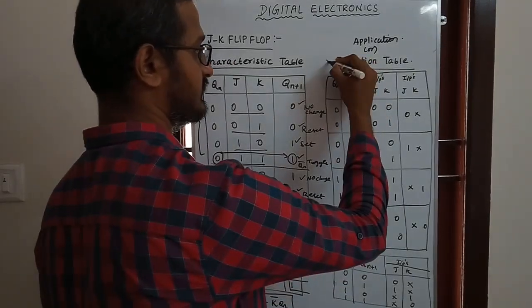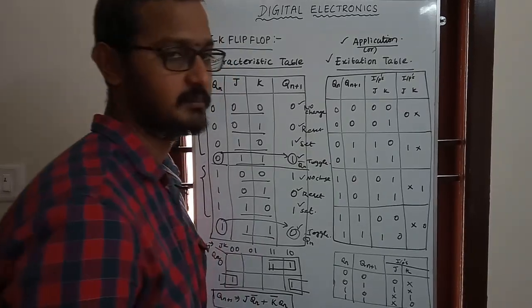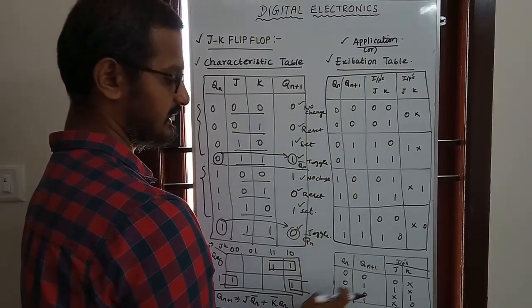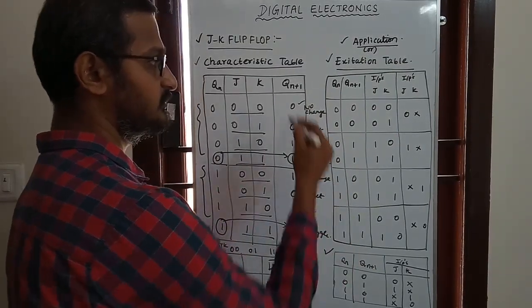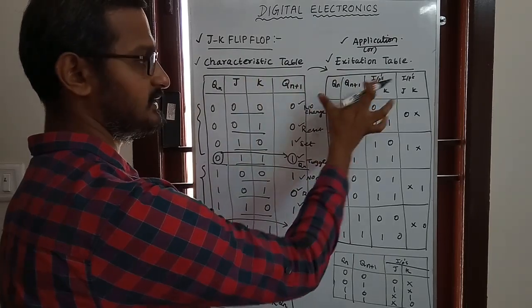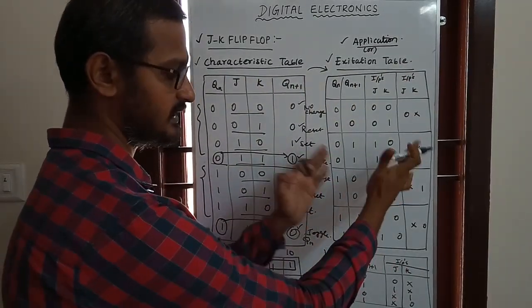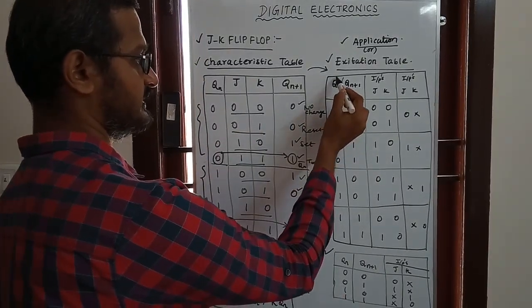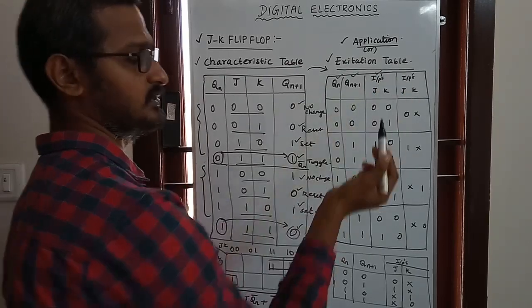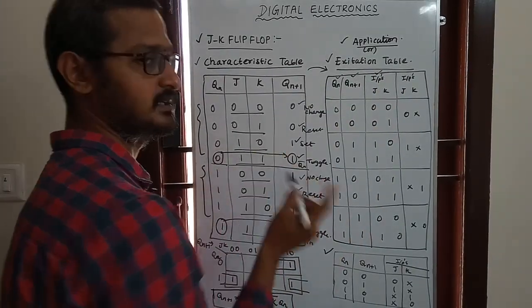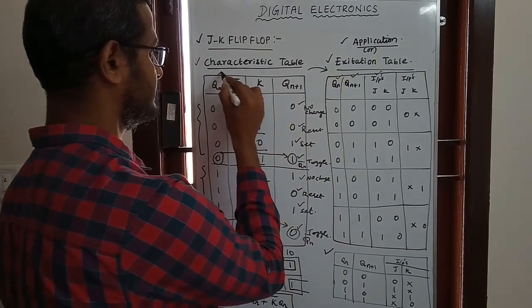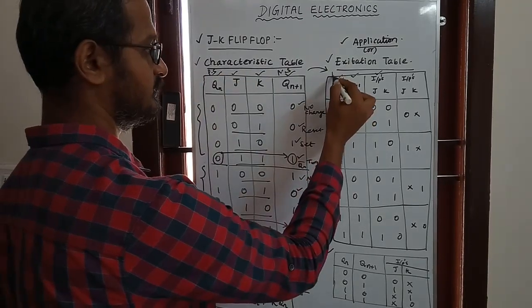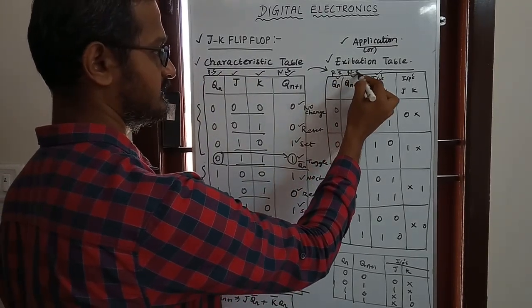Here is the Excitation Table, also called the application table. The excitation table is derived from the characteristics table and shows present state and next state with the required inputs. It summarizes what J and K inputs are needed to achieve a desired state transition.